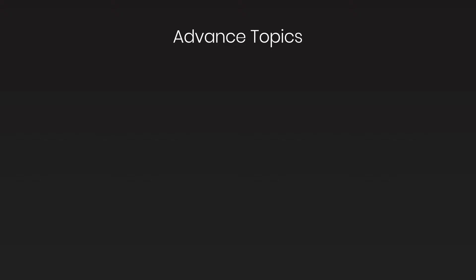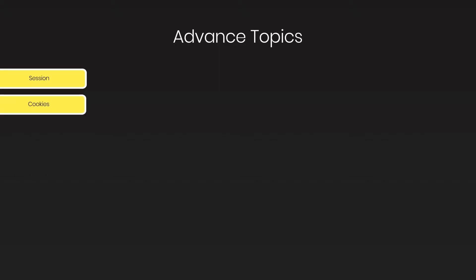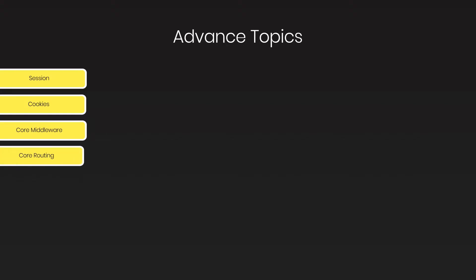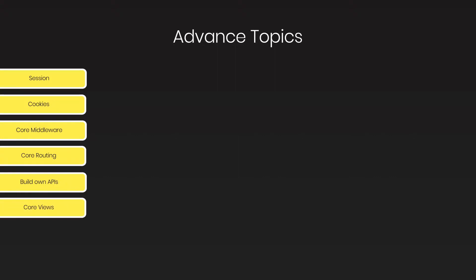We are going to first understand what a session is. Then we will look at how to create cookies in an Express application. Then we'll look at what core middleware and core routing are, build our own API using Express, understand core views, and see how to store data in a database — covering database integration in an Express application. This is a very important section.